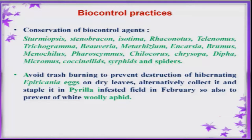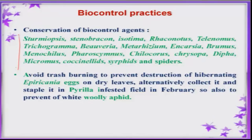The sugarcane ecosystem accommodates many natural enemies — both parasitoids, predators, and even some fungi. These bioagents can be encouraged by conserving them, adopting suitable agronomic practices, and applying safe and green insecticides. Apriconia eggs are an important parasitoid in case of pyrilla. To encourage them, one must prevent burning in the field, as the trash contains many Apriconia eggs and burning destroys the entire population.